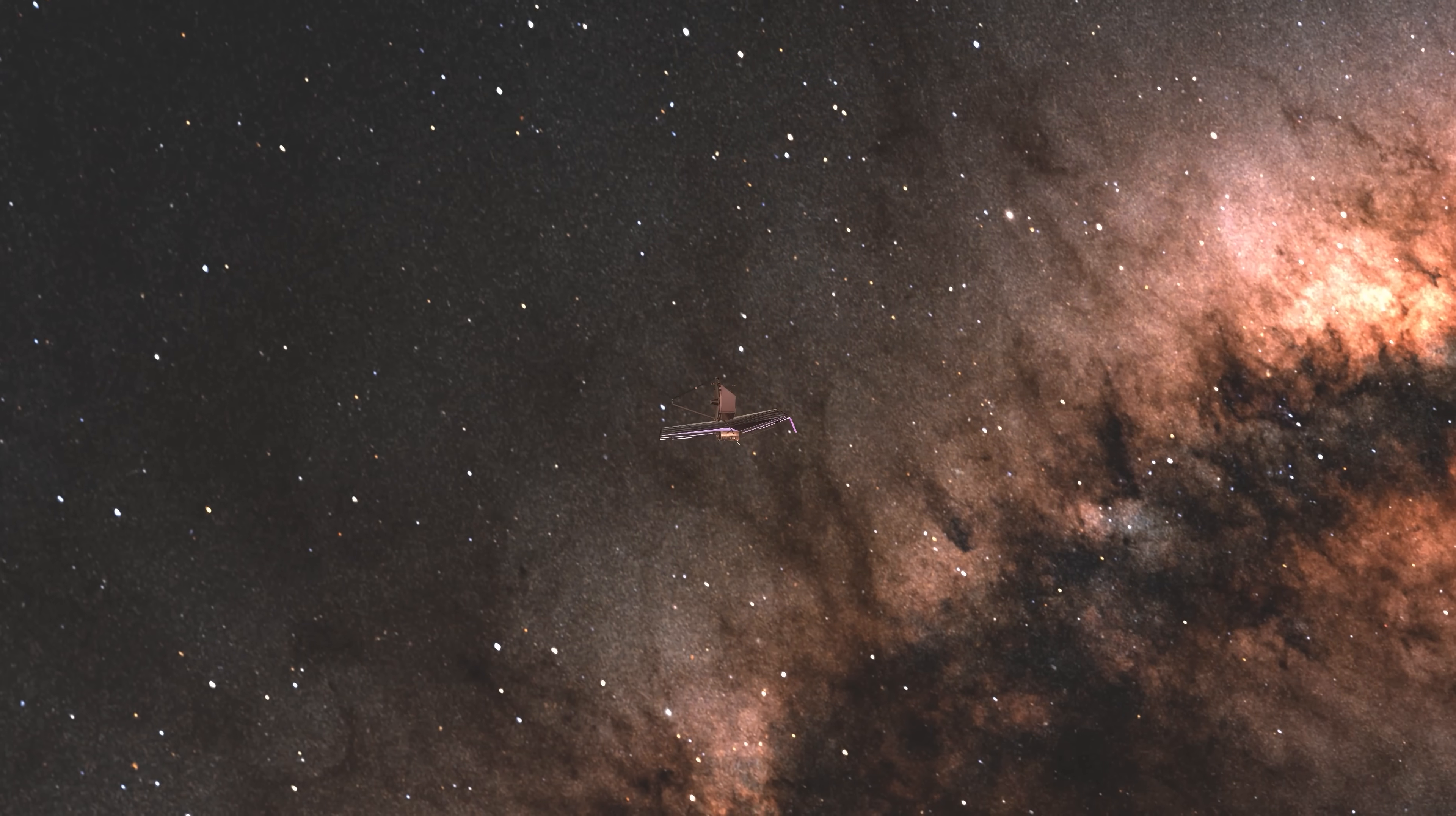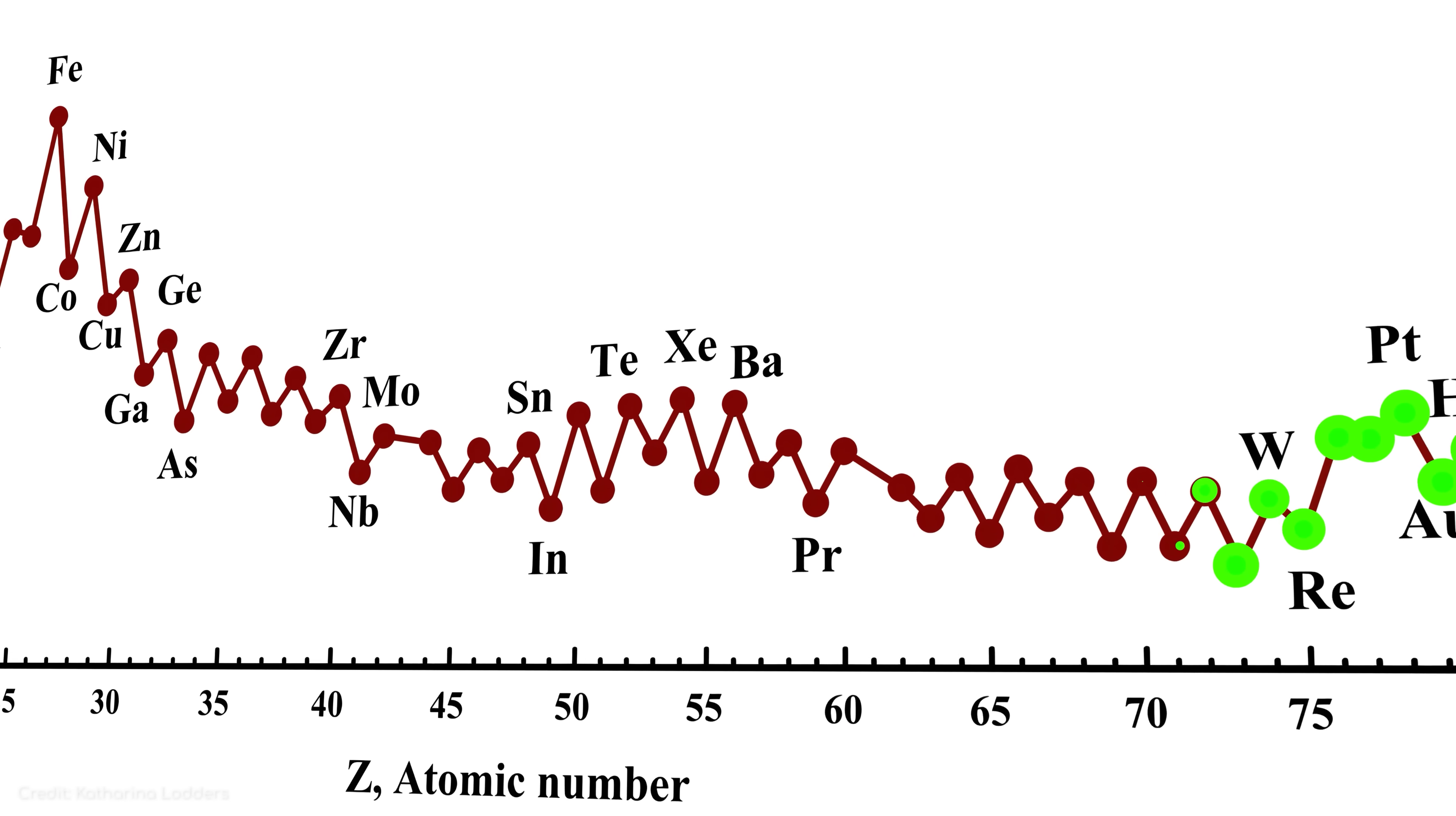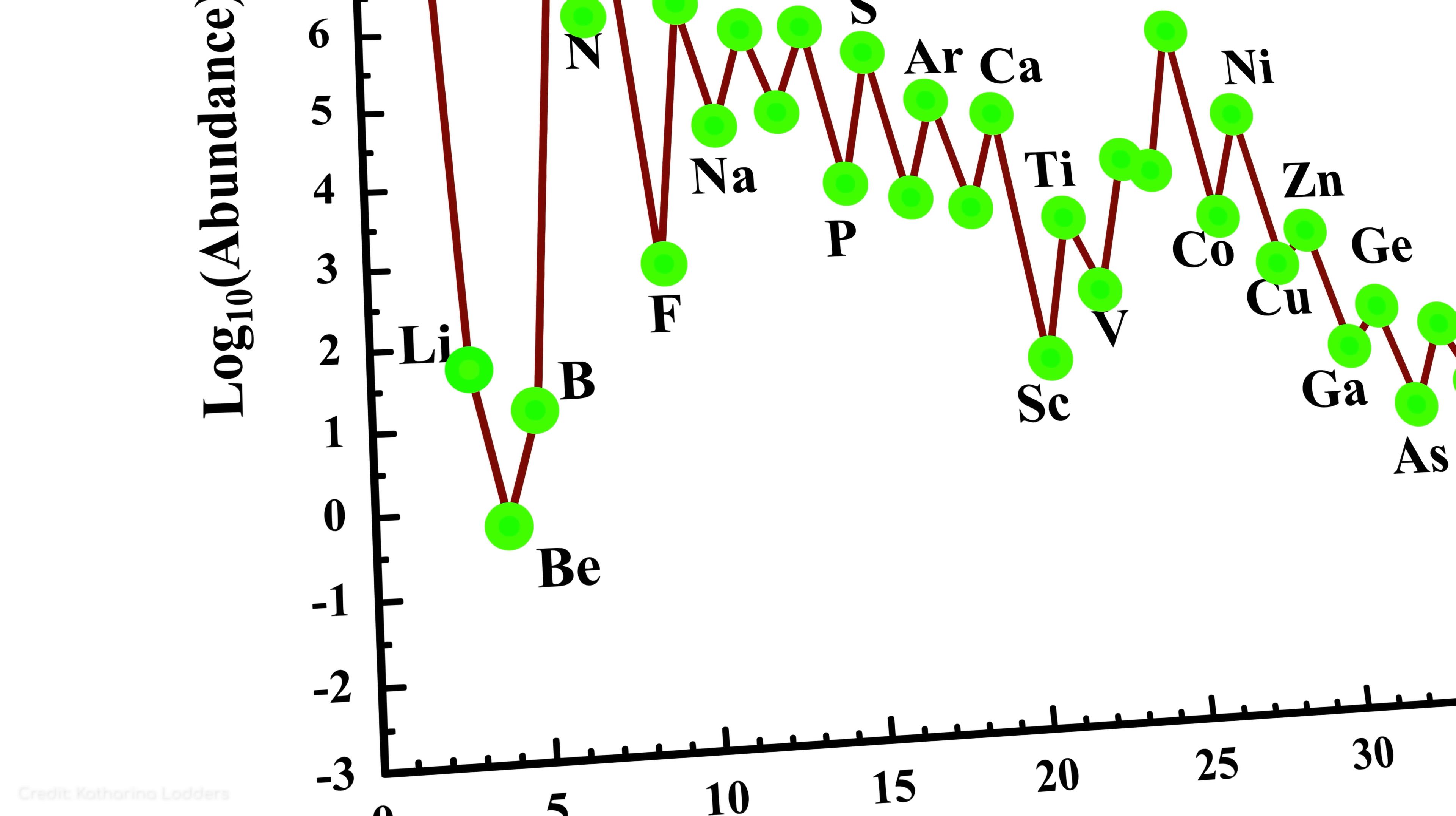If our observations could improve, and we could better measure the amount of lithium in the early universe as a whole, perhaps the numbers would come back into line on their own. Maybe the lithium problem never existed in the first place.